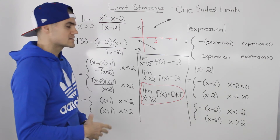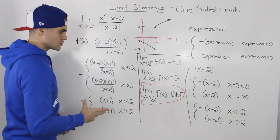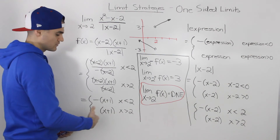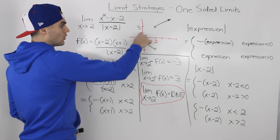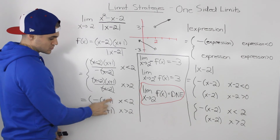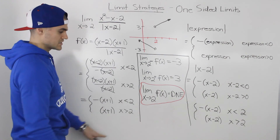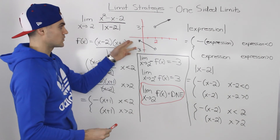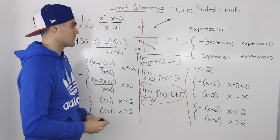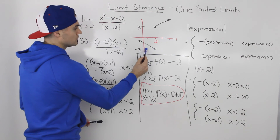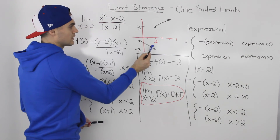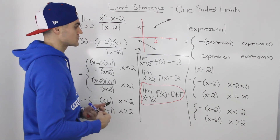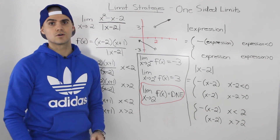Overall, not too bad of a question, similar to other examples. The tricky part was that the simplified piecewise function contains actual expressions rather than just constants like negative one and positive one. Whenever you get an actual expression in the simplified piecewise function, make a table of values to help visualize it. The key is to check the y values at the holes — if they differ, the limit doesn't exist; if they're the same, it does.